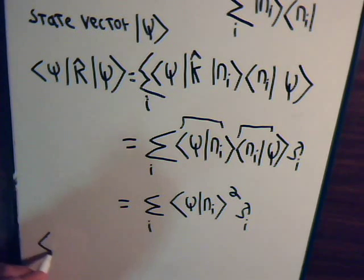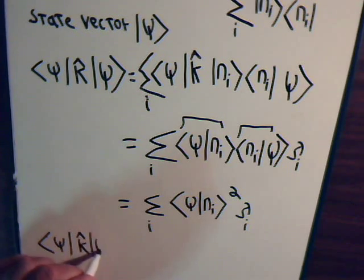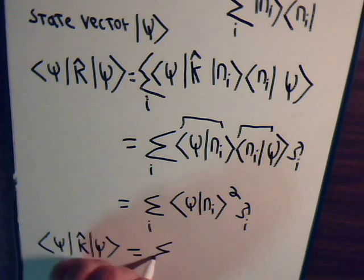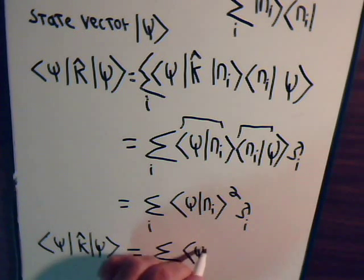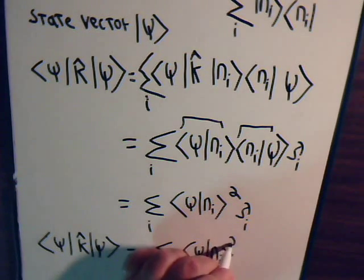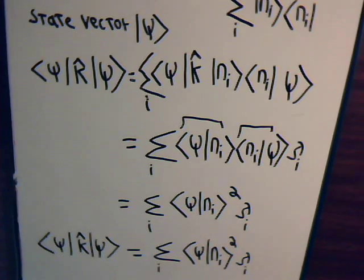is that this ⟨psi|K̂|psi⟩ equals this, the inner product squared, times lambda i.